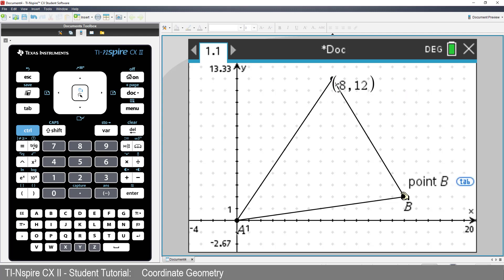Use these same steps to identify the coordinates of Point B, and then move Point B to 16,4.